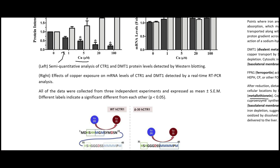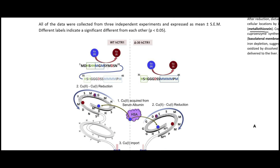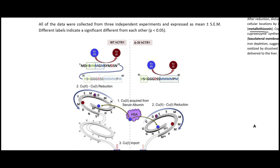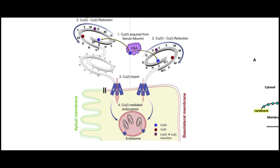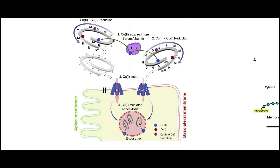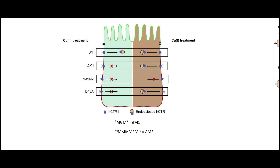So the enterocytes down-regulate the protein that brings in copper when there is too much of it. Looking at CTR1, the protein has a C-terminal domain with histidine-rich motifs and methionine-rich motifs, which are important for CTR1 to be brought into the cell in endosomes.